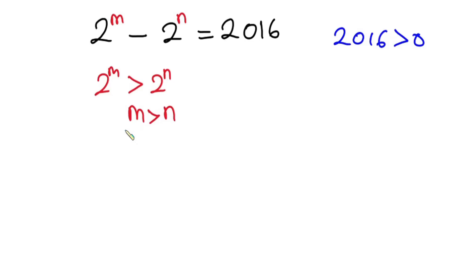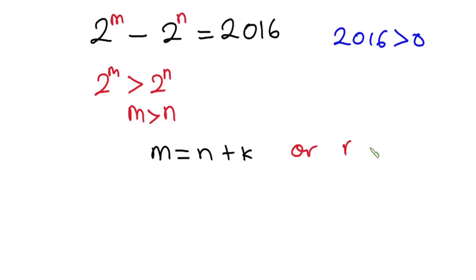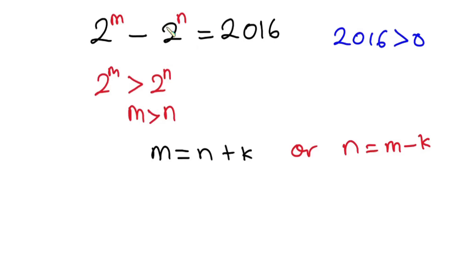So here we can say that m is greater than n. Now, under what instance can we relate m to n? We can say that m is equal to n plus a certain constant, say k. Or equivalently, n will equal m minus k. We will focus on the first form, so now we have m is equal to n plus k. In place of m, I'm going to substitute n plus k into the equation.